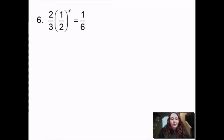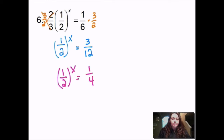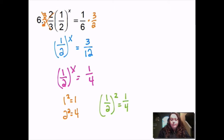This one: 2/3 times 1/2 to the x power equals 1/6. I have to get rid of that fraction in front because it's not part of the piece being raised to the exponent, so I multiply by its reciprocal — I flip 2/3 to get 3/2, and multiply both sides by 3/2. That gives me 1/2 to the x equals 3/12. I need to simplify 3/12 because it reduces — 3 goes into 3 once and 3 goes into 12 four times — giving me 1/4. Now, 1 squared equals 1 and 2 squared equals 4, so 1/2 squared equals 1/4, which means x equals 2.